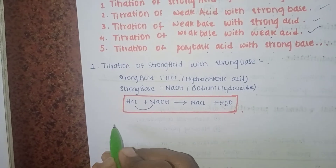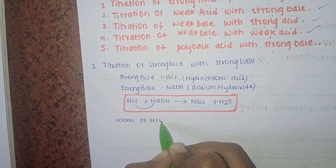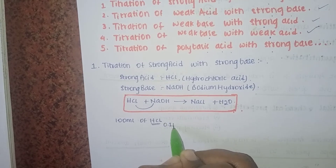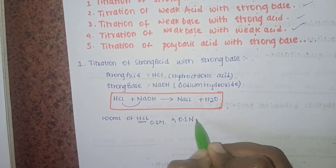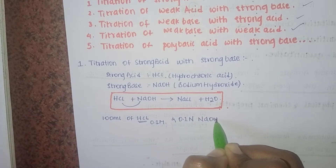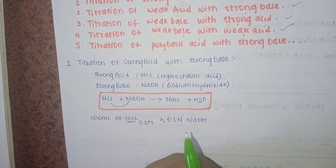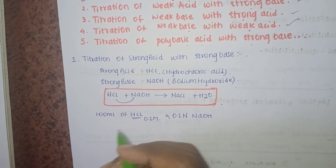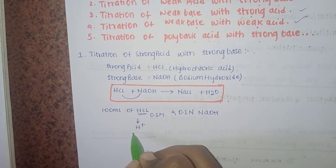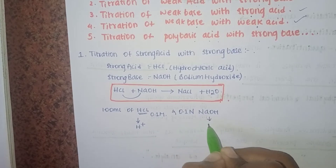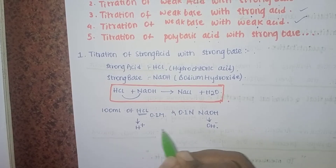We will take 100 ml of HCl and titrate it. NaOH will be gradually added to the HCl. After the titration is done, HCl will react. HCl will be able to interact with OH⁻ ions. This interaction will form the neutralization.